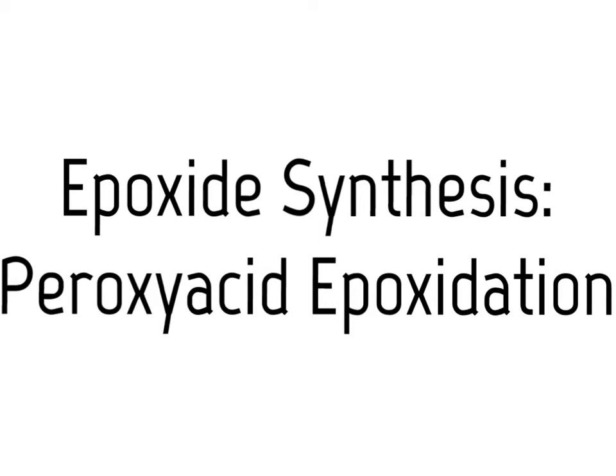In the next couple of videos we focus on ways to create epoxide products — products that have a three-membered ring with an oxygen atom as one of the three atoms in that ring. In this particular video we focus on the epoxidation of peroxy acids as a way to create epoxides.